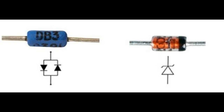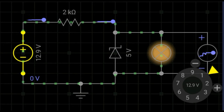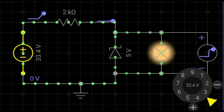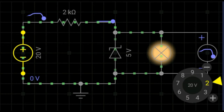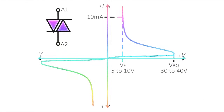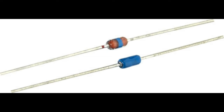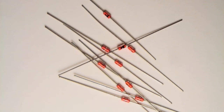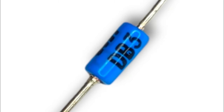In a Zener diode, when current increases the voltage remains constant, but in a DIAC the transistor action decreases the voltage while increasing current. In the conduction state, the resistance of the DIAC is reduced to a very low value, allowing a large amount of current to flow. In most common DIACs such as the ST2 or DB3, the breakdown voltage is usually around ±25 V to 35 V. DIACs with higher breakdown voltages, such as 40 V DB4, are also available.